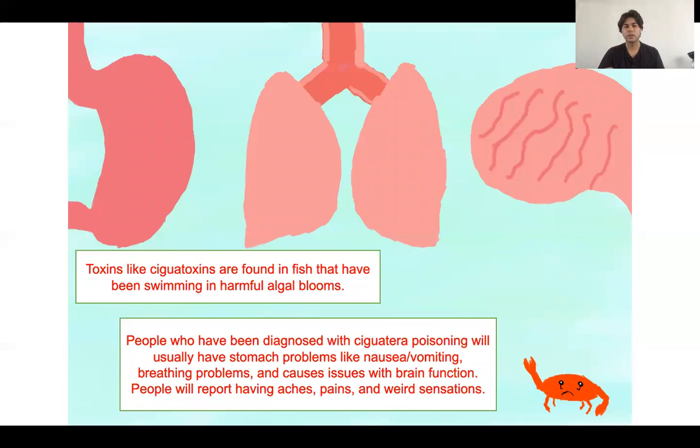A few of these toxins, like ciguatoxins, there's no real other way to put it. So this is known as one of the most common seafood related illnesses that have been reported. People who are diagnosed with this usually have problems with their stomach. They have breathing problems with their lungs.